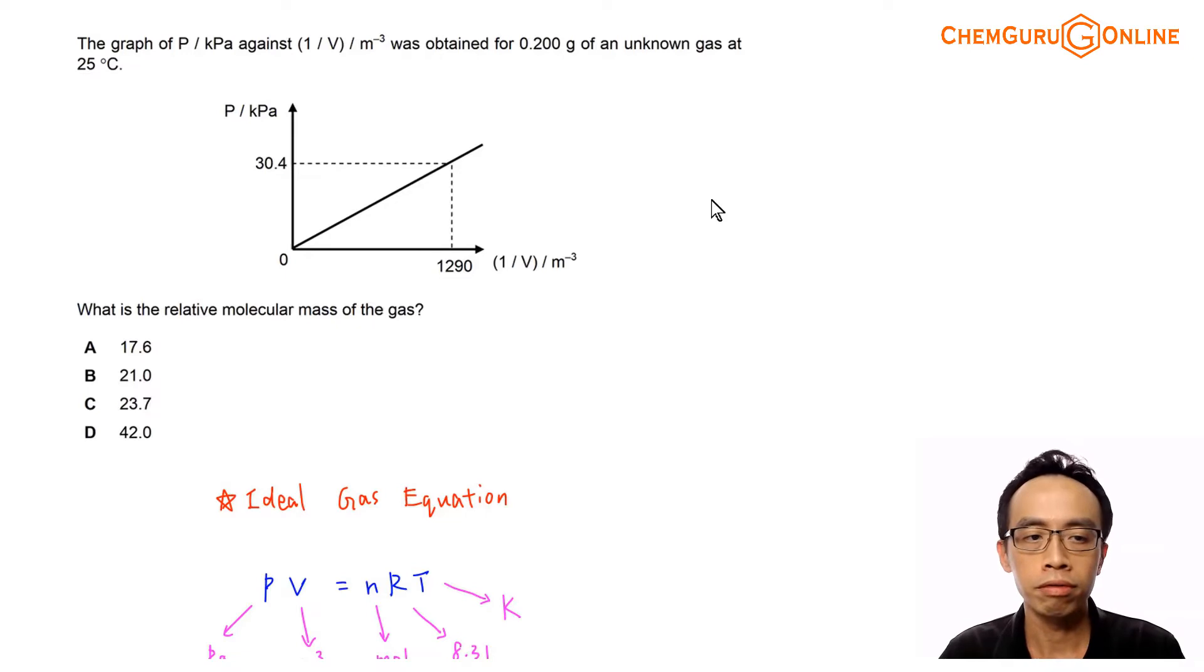The graph of P in terms of kilopascal against 1 over V in terms of per meter cube was obtained for 0.200 gram of an unknown gas at 25 degrees C. So the graph is given here. Later we will interpret this graph. So what is the relative molecular mass of the gas? And we're given four options here.